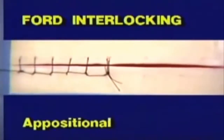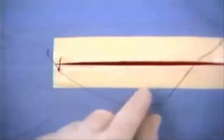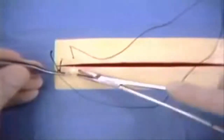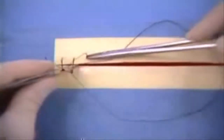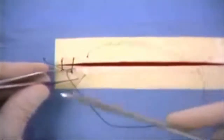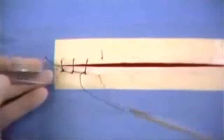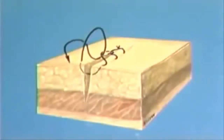The fourth pattern to be demonstrated is the forward interlocking pattern. This is an appositional suture pattern. The forward interlocking suture is a modification of the simple continuous suture. The beginning of the suture is as described for the simple continuous suture. The needle is advanced, a loop is formed, and the needle is passed perpendicularly through the tissues in the same direction. After the needle is passed from the tissues, it is drawn through the preformed loop and tightened. The pattern is repeated for the length of the incision. This illustration shows a completed forward interlocking suture.